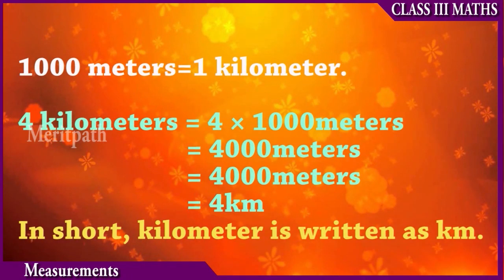1000 meters is equal to 1 kilometer. So, 4 kilometers is equal to 4 into 1000 meters, that is 4000 meters. Similarly, 4000 meters becomes 4 kilometers, since 1000 meters is equal to 1 kilometer.